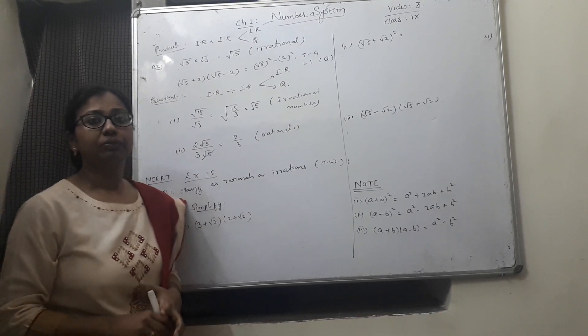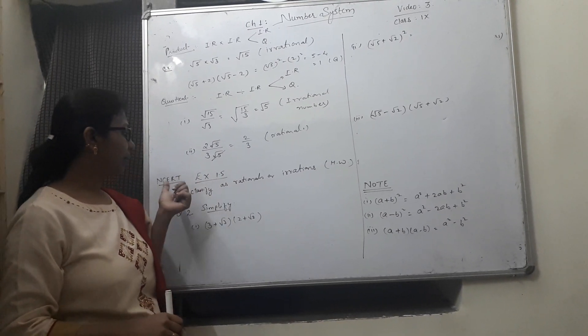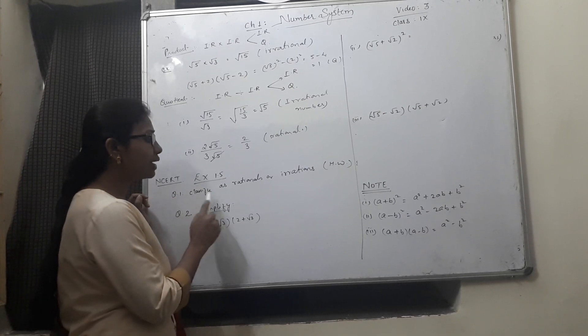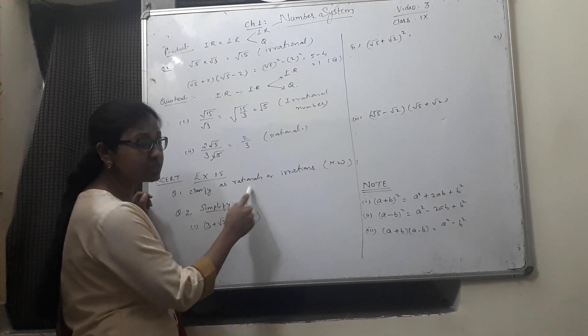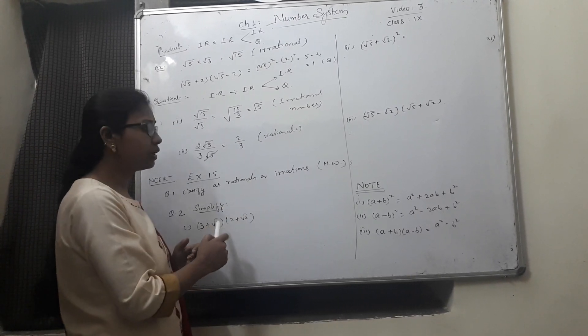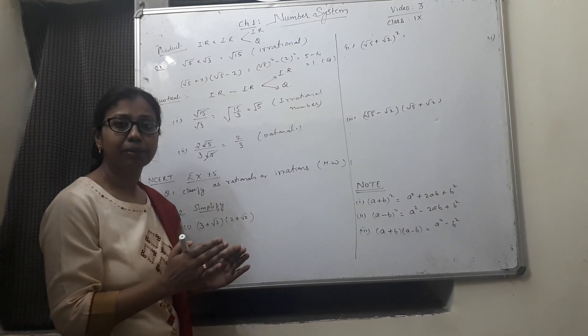Now we are going to solve few questions from NCERT exercise 1.5. Question number 1. Classify the following as rationals or irrationals. This is very easy question. You have to only identify the rational numbers and irrational numbers.